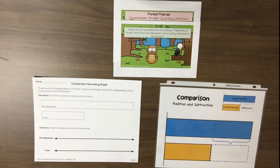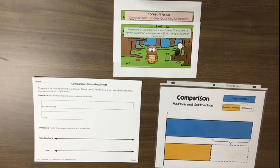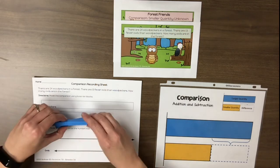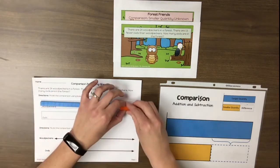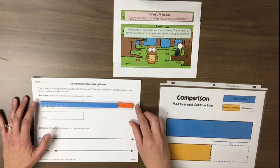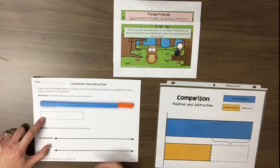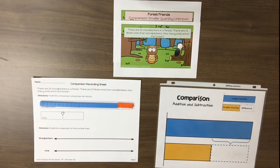Now let's look at a comparison smaller quantity unknown scenario. There are 24 woodpeckers in the forest. There are 13 fewer owls than woodpeckers in the forest. How many owls are in the forest? Students should discuss what is known and what is unknown. In this problem, we know the larger quantity — the 24 woodpeckers — and we know the difference, that there are 13 fewer owls than woodpeckers. The unknown is the smaller quantity. We use base 10 blocks to represent the 24 woodpeckers, the larger quantity. The smaller quantity of owls is represented with a question mark because it's unknown.